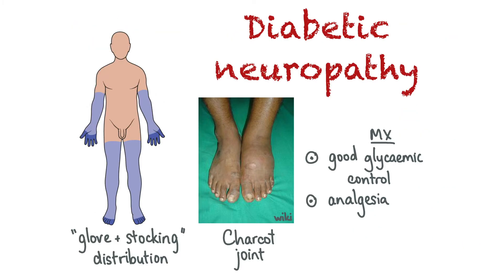Diabetic neuropathy describes pain and reduced sensation in a glove and stocking distribution, which means it starts at the peripheries and ascends, typically occurring in people with a long history of poorly controlled diabetes. It can result in a Charcot joint. Patients with diabetes can be screened for neuropathy using a 10G monofilament.